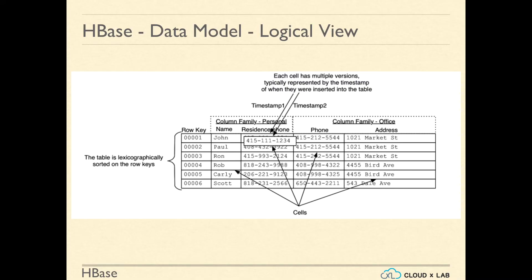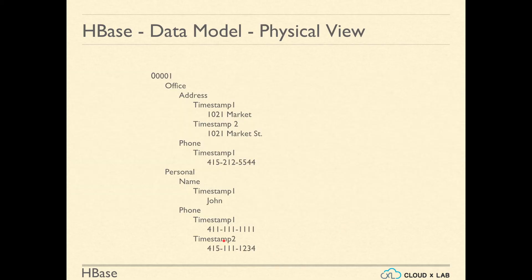This is the logical view of a table. It has column families, personal and office. In personal column family, we have name and home phone numbers. While in office column family, we have phone and address columns. The physical view is represented hierarchically. Each key contains column families which has columns and then timestamps and then the values.